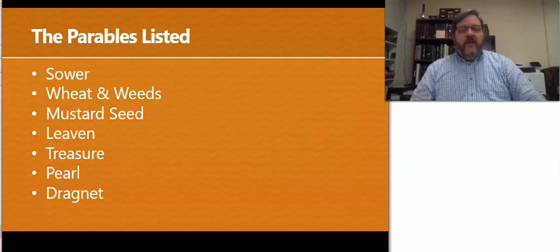So here are the parables. We've looked at the sower in Matthew 13. We're going to look at three today: the wheat and the tares, or the wheat and the weeds, the mustard seed and the leaven. Next week we'll probably look at the other three.